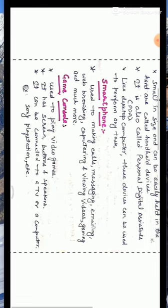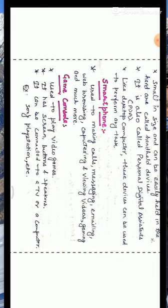The next handheld device is game console. A game console is a device used to play video games and it contains display screens, buttons and speakers. It can be connected to a TV or computer, and in this case a user can also play games through a handheld controller. The example of game console is Sony PlayStation.